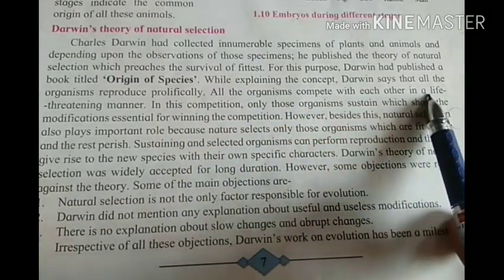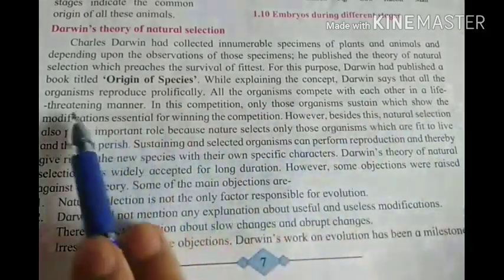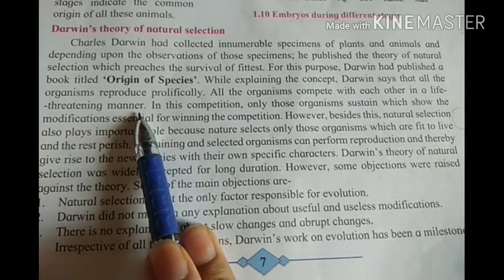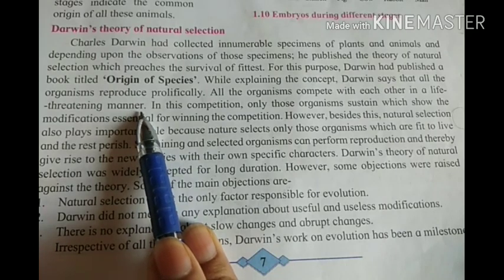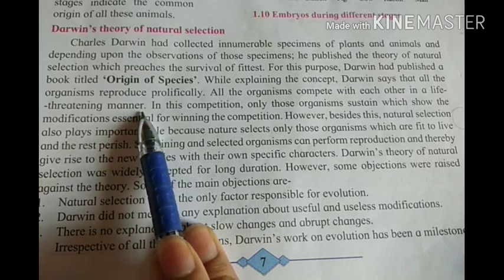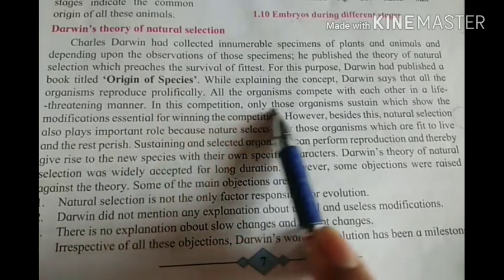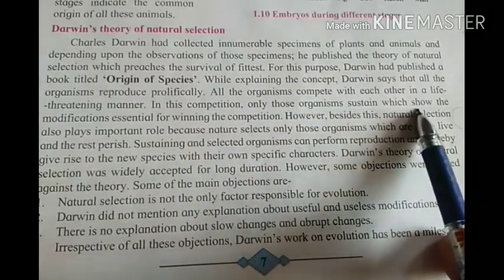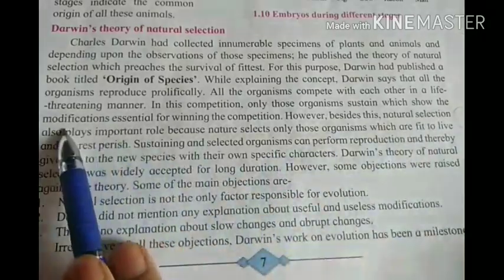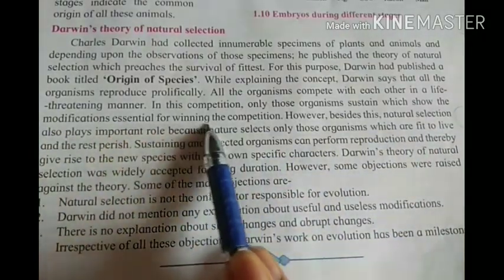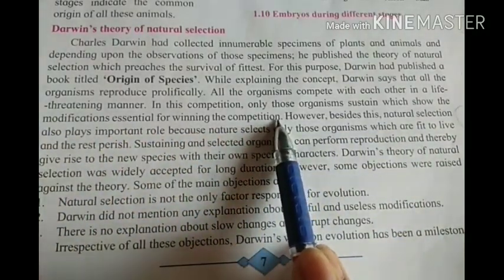All the organisms compete with each other in a life-threatening manner. All the organisms that are reproduced produce the same young ones, and in all living things there is competition with each other. In this competition, only those organisms sustain which show the modifications essential for winning the competition.